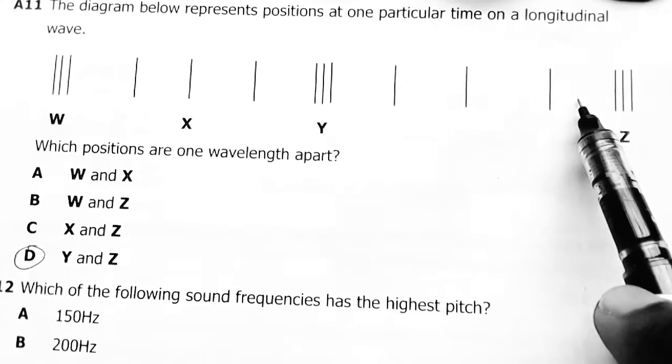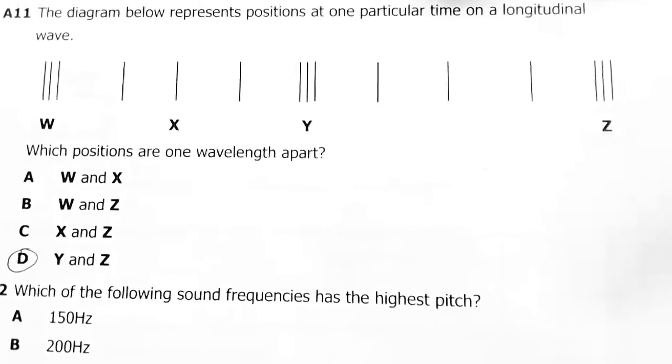My answer was D, Z and Y. They are one wavelength apart. Remember that a compression and a rarefaction creates one cycle, so this is the next compression for the next cycle or for the next wave.